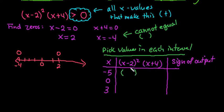With this one, if I take negative 5 minus 2, that gives me a negative value, but then I'm going to square it, which makes it positive. Negative 5 plus 4 gives me a negative value, so if I take a negative times a negative times a negative, that ends up with a negative sign.